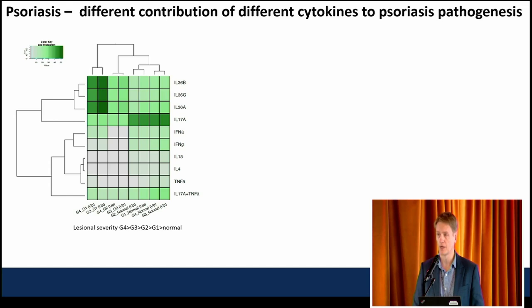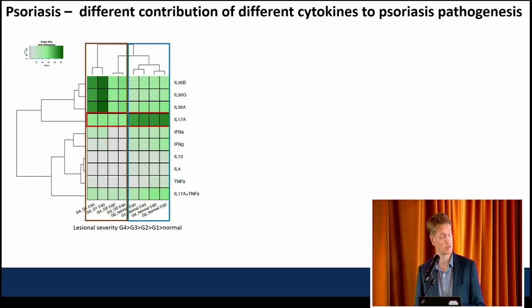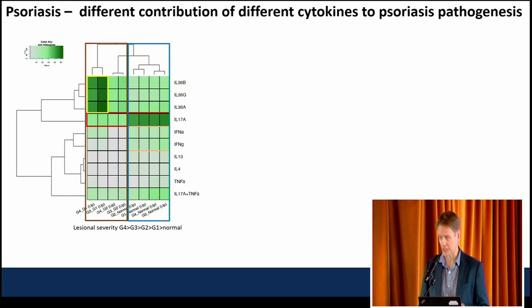We're comparing the severities against one another — severe disease with mild disease, or severe lesional score with moderate lesional score. The interferon responses, both type 1 and type 2, are more associated with the presence of disease rather than severity. And if you look at IL-36, you're really seeing that it's mostly localized to the degree of inflammation and the thickness of the epidermis — that's where that signal is most prominent.